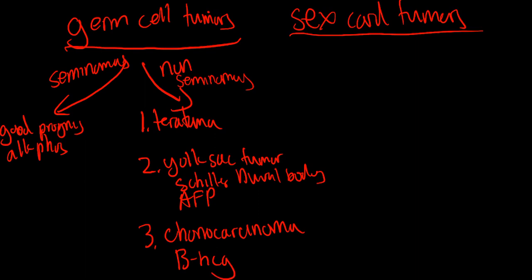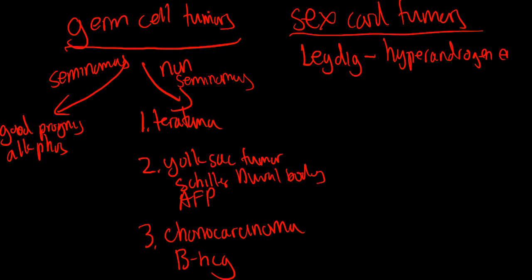Now we can go on to the sex cord tumors. There's the Leydig cell tumor. Leydig cells make androgen, so you have hyperandrogenemia. You also get the Reinke crystals.